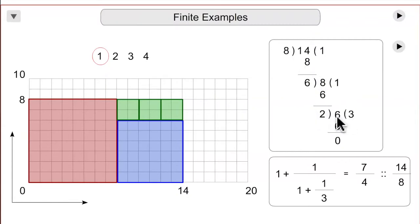2 goes into 6 three times, remainder 0. That makes 2 the greatest common denominator. That's reflected in the rectangular grid by the smallest square being a 2 by 2 square.